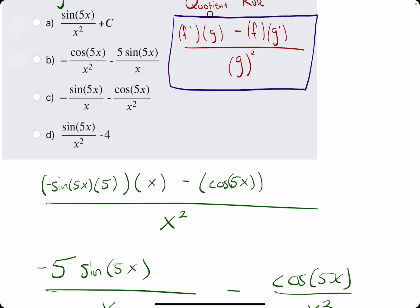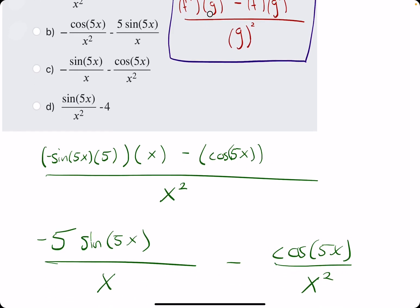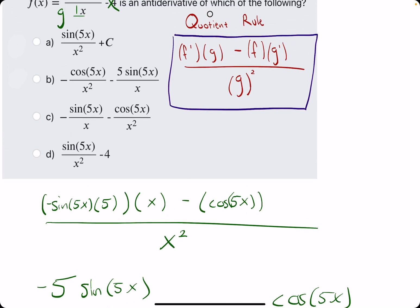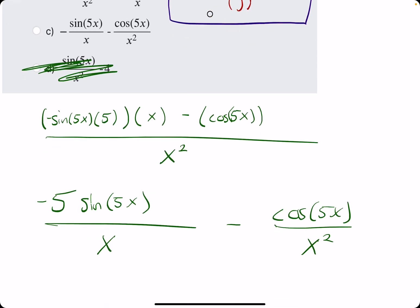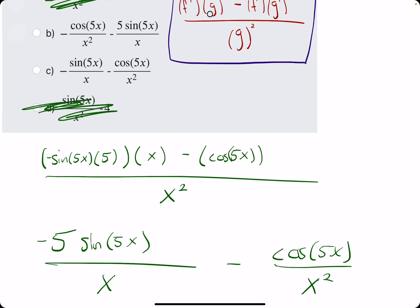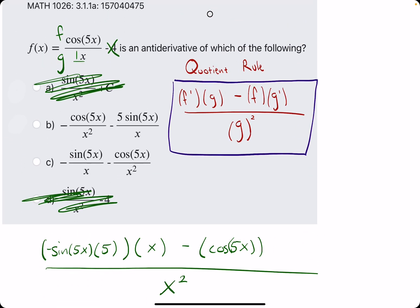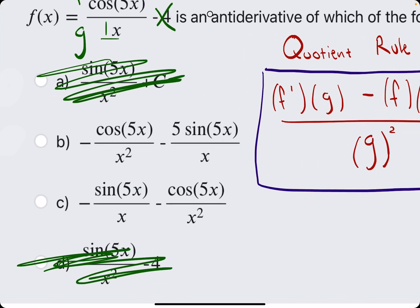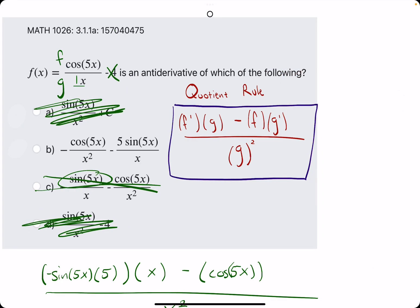We want a negative 5 sine of 5x over x. Looks like a couple answers have that. So, we can eliminate the ones that do not. And then, we want a minus cosine of 5x over x squared. It took me a second to see what the difference was between those. Our sine has the 5 in front of it. Theirs does not. So, it looks like B is our best answer.